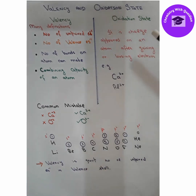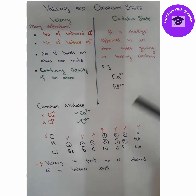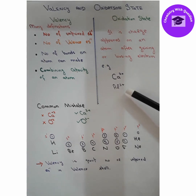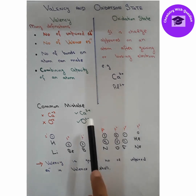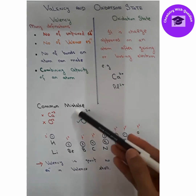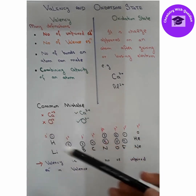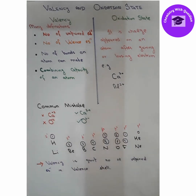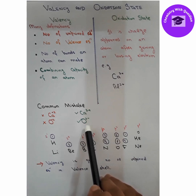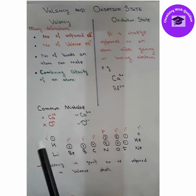Oxidation state is the charge that appears on an atom after gaining or losing electrons. For example, calcium is an alkaline group metal with two electrons in the outermost shell — if it loses its electrons it forms a cation with a 2+ charge. Similarly, aluminum can lose three electrons and have a 3+ charge. Note the common mistake: you must put the positive sign after the number, not before it — so it is written as 2+, not +2. Oxygen can gain two electrons to form an anion written as O²⁻; writing it as O⁻² is wrong.